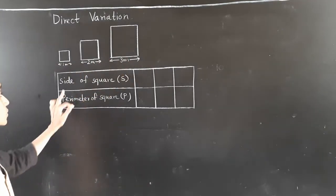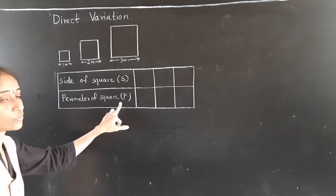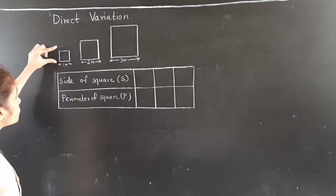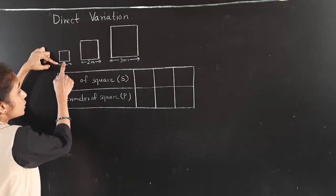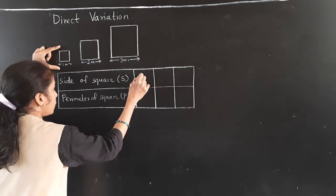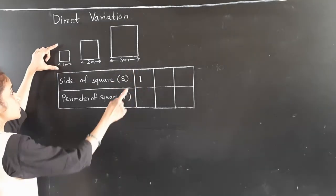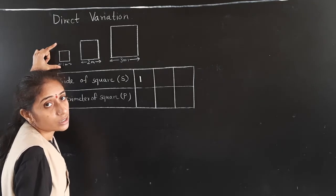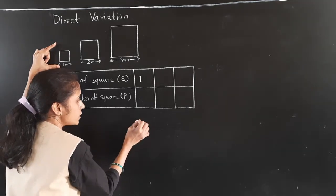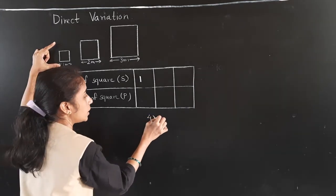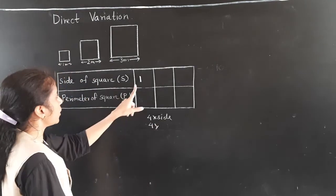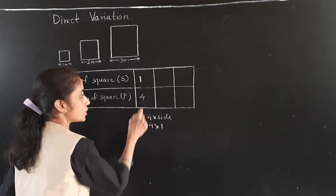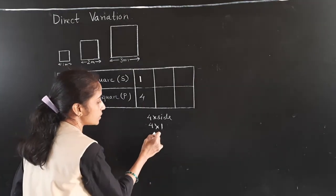Now let's look at Direct Variation using squares. We consider S for the side of a square and P for its perimeter. For the first square, the side is 1 meter. The formula for the perimeter of a square is 4 multiplied by side, so 4 times 1 equals 4 meters.